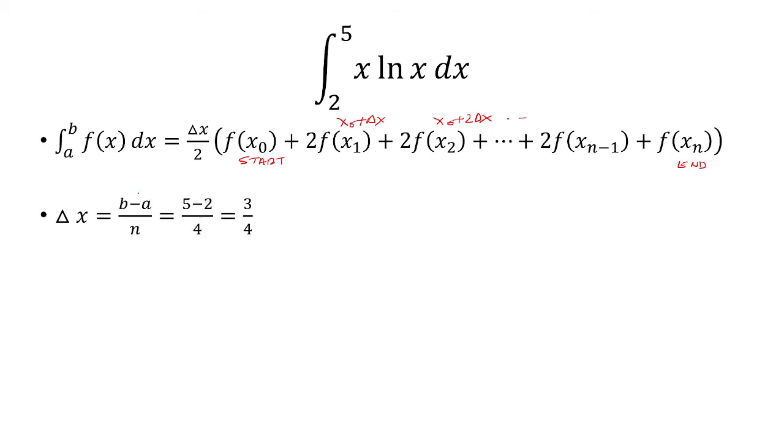For us, delta x is b minus a over n, which is 5 minus 2 over 4. That equals 3/4.